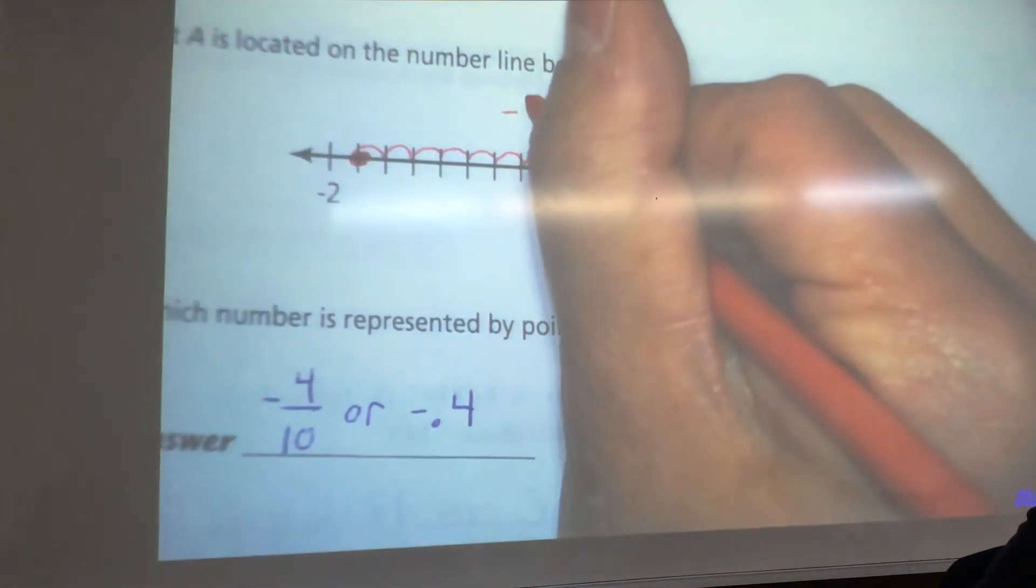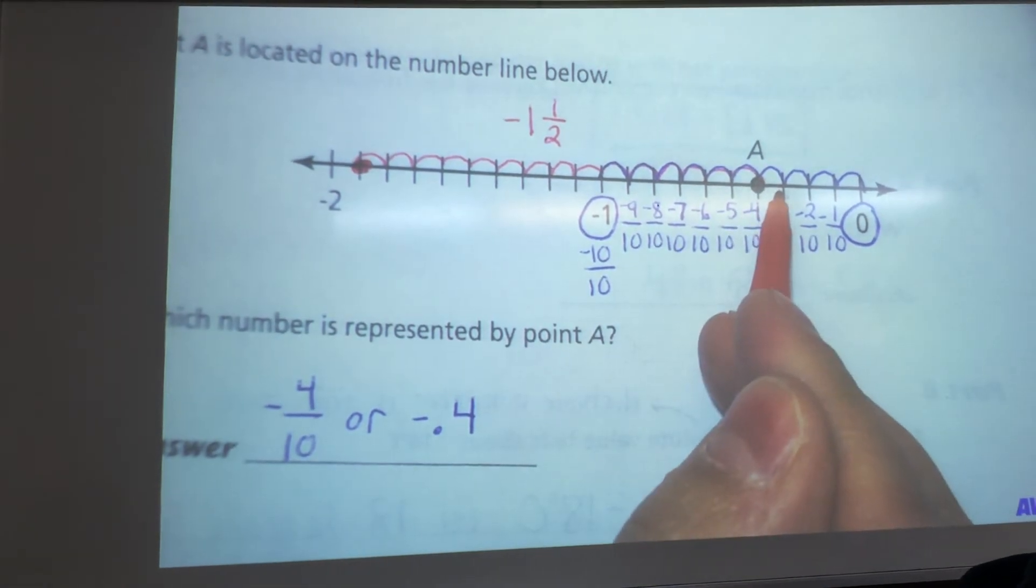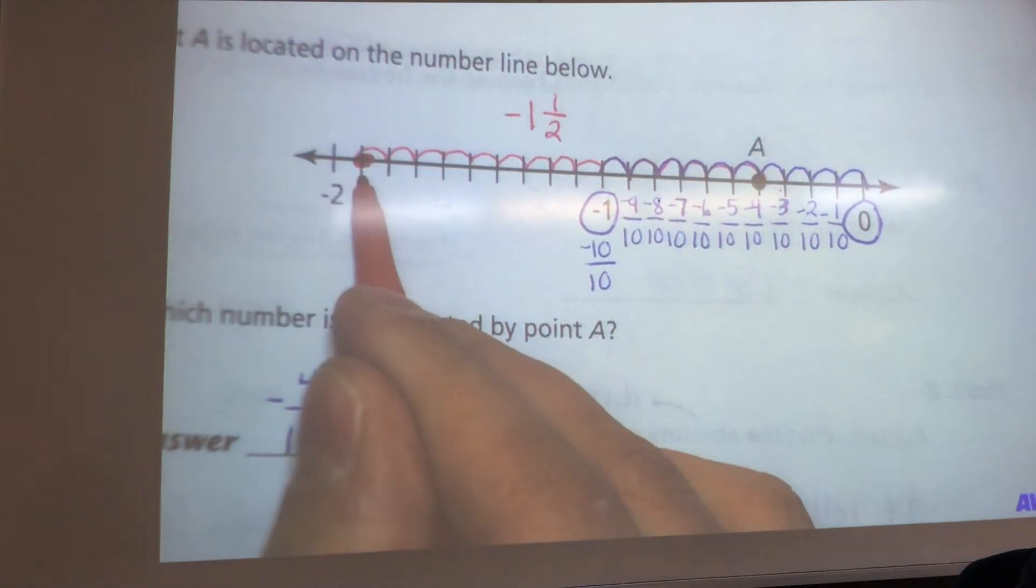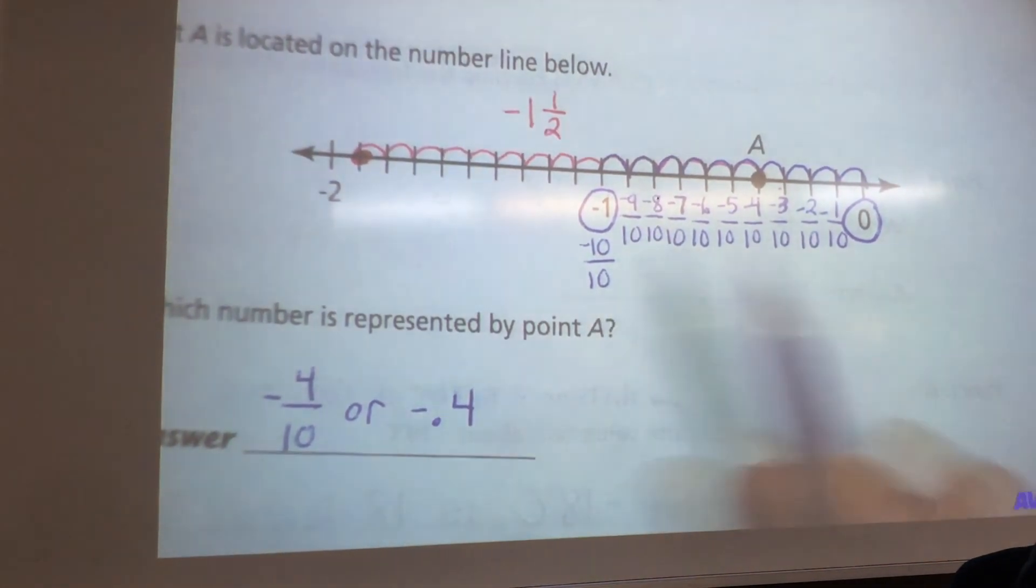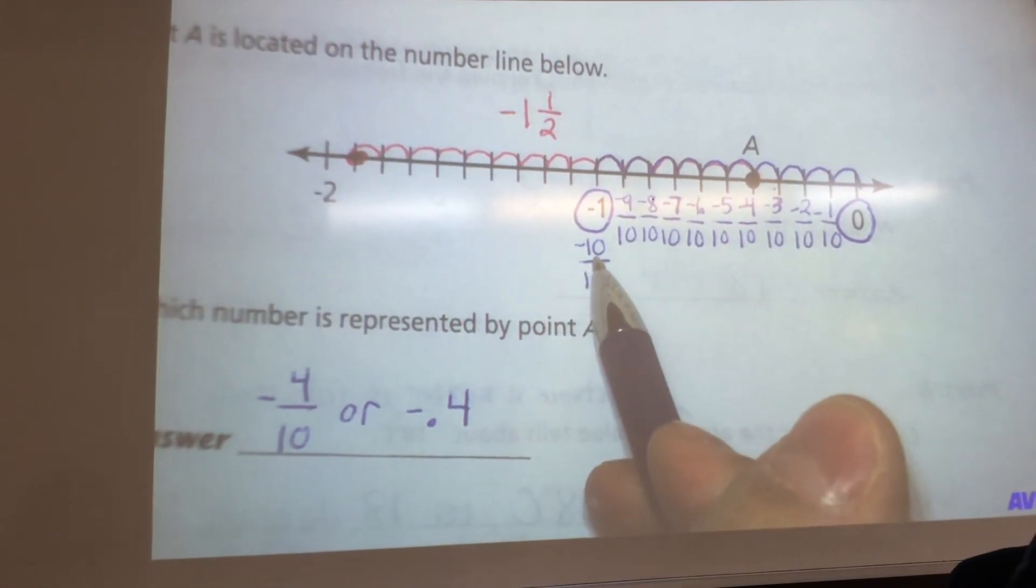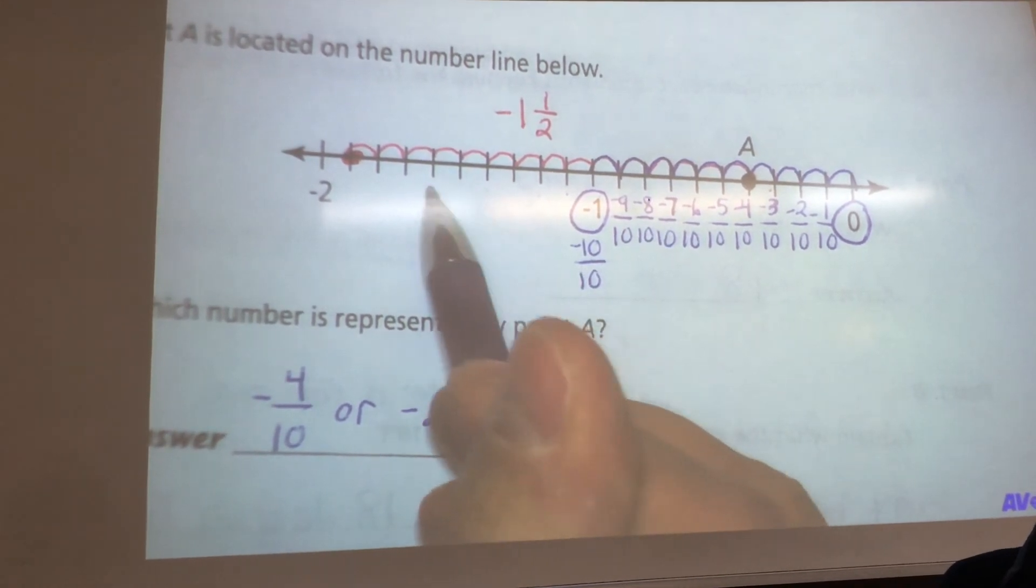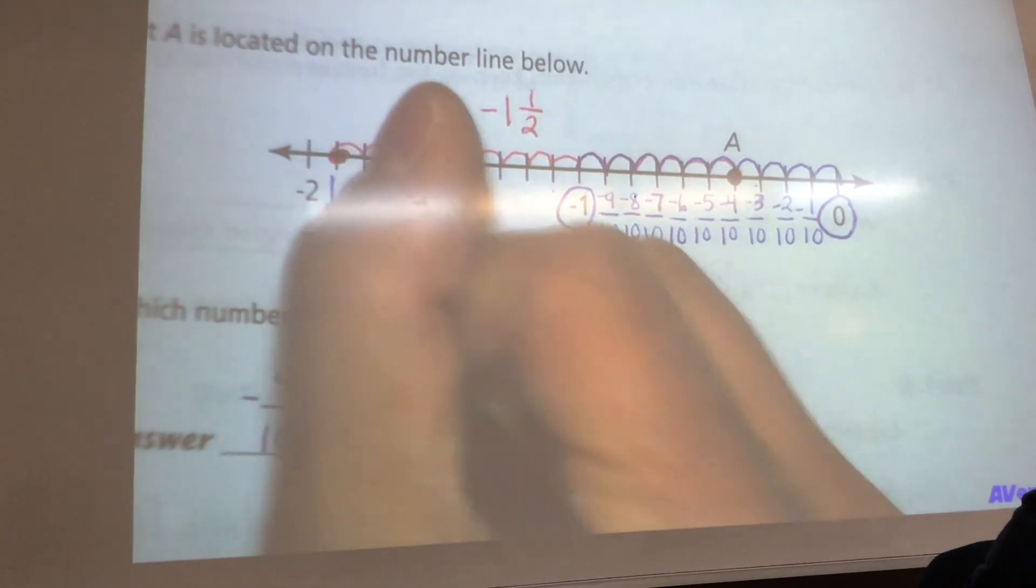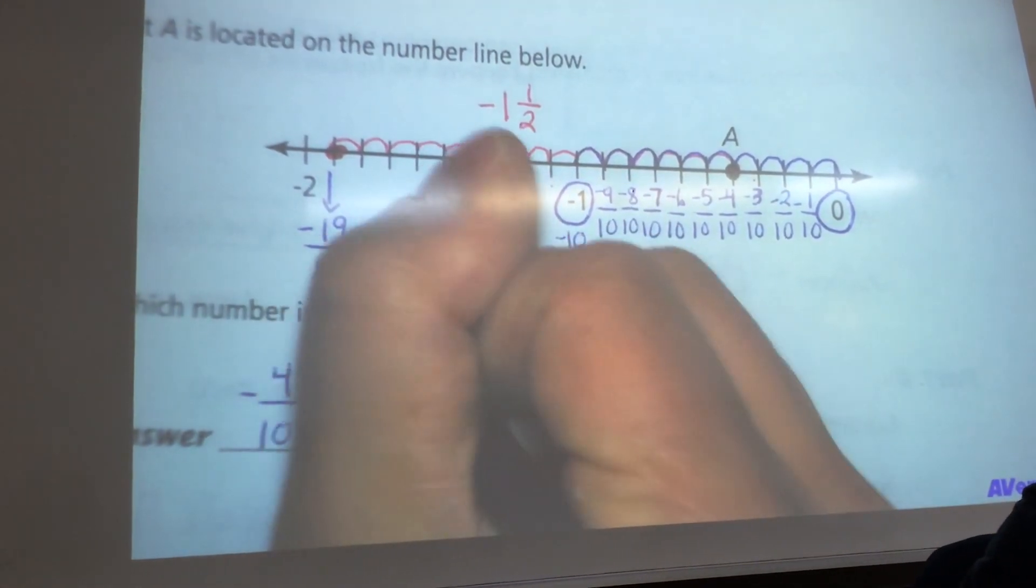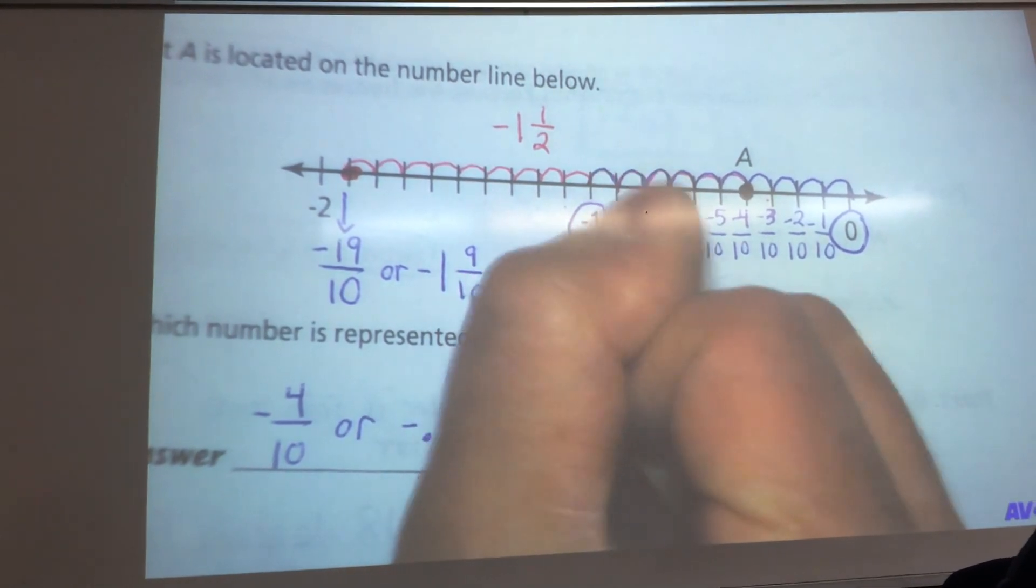That is negative 1 and a half or 1 and a half less than point A because that's the same as 15 tenths. All you need to do now is figure out what that point is, but that's simple because that's negative 10 tenths, 11 tenths, 12 tenths, 13, 14, 15, 16, 17, 18, 19. This point is negative 19 tenths or negative 1 and 9 tenths.